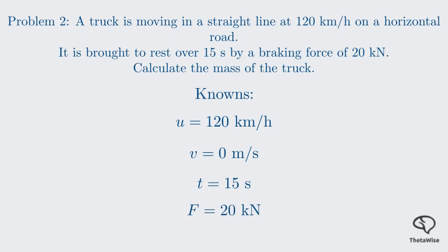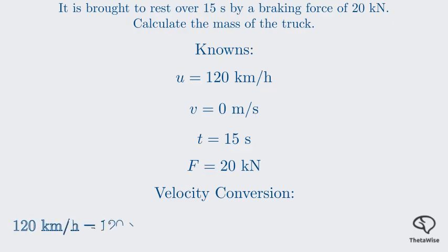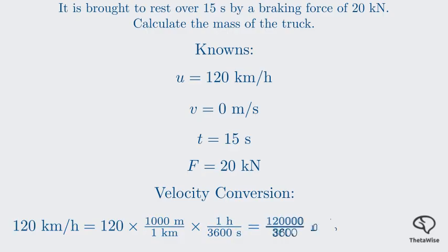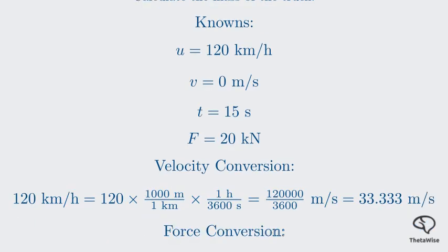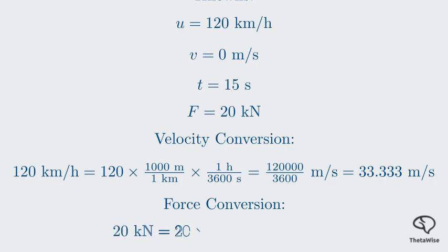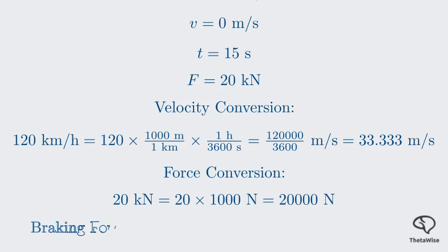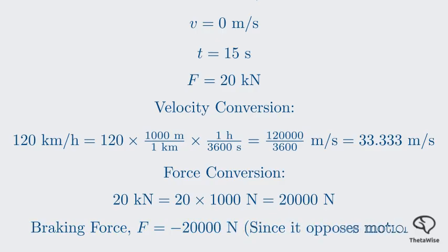As before, we must first convert all our units to the standard SI system. This means converting both kilometers per hour and kilonewtons. First, for the velocity, we multiply 120 by 1000 and divide by 3600. This calculation results in an initial velocity of 33.333 meters per second. Next, let's convert the braking force. The prefix kilo means 1000. So, 20 kilonewtons is equal to 20 times 1000, which is 20,000 newtons. Importantly, since it's a braking force that stops the truck, it must act in the opposite direction of motion. So, the force F is negative 20,000 newtons.